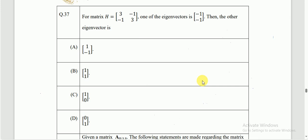We are looking at question number 37 from the sample paper. This question is based on linear algebra — specifically the topic of eigenvalues and eigenvectors. For matrix H, which is symmetrical about the diagonal, one eigenvector is given and we have to find the other eigenvector.